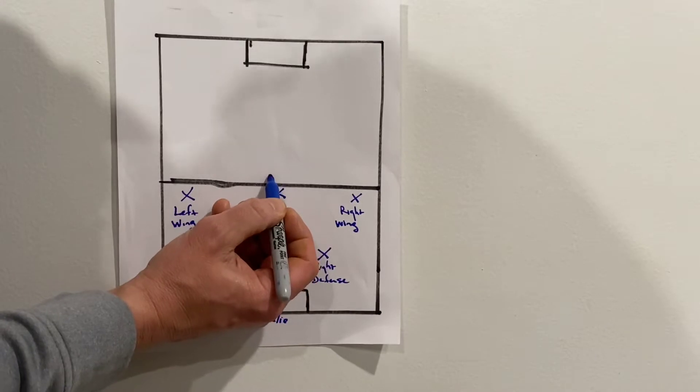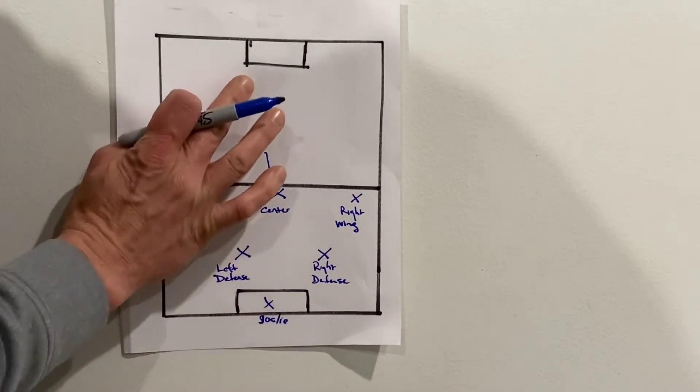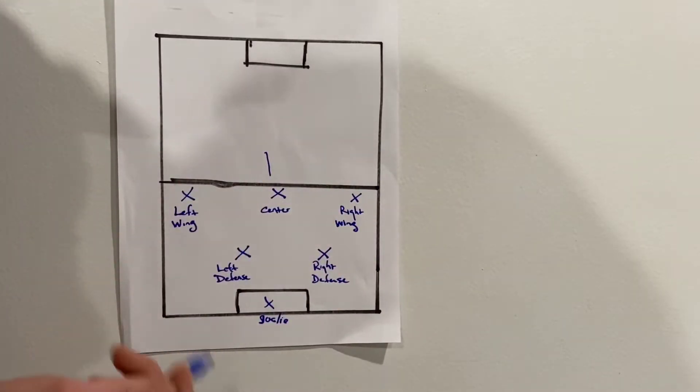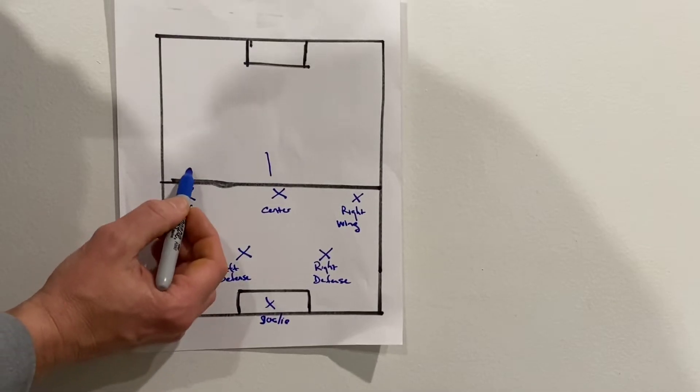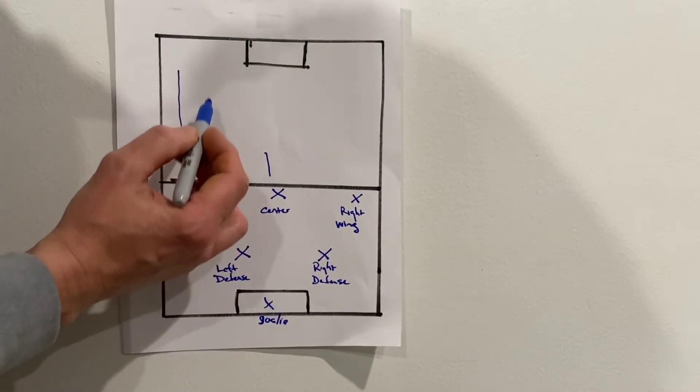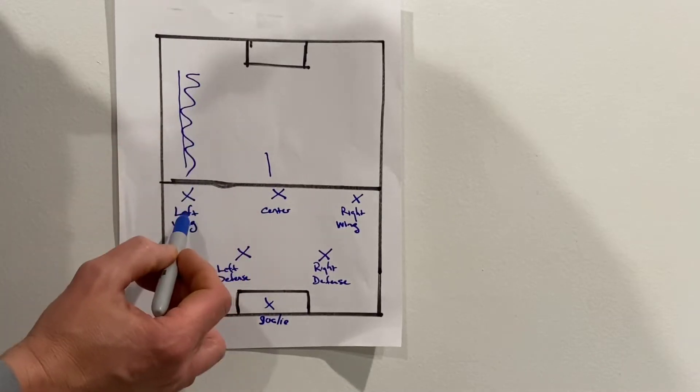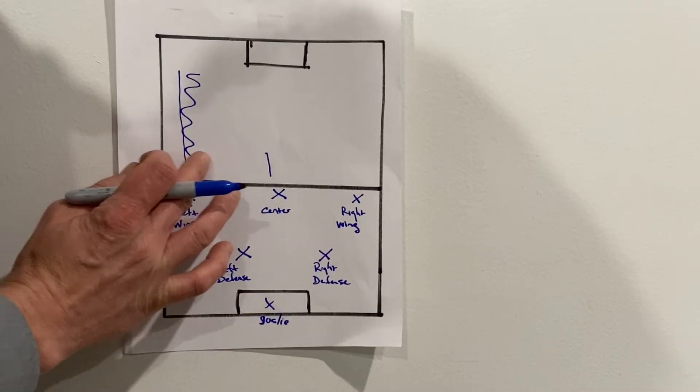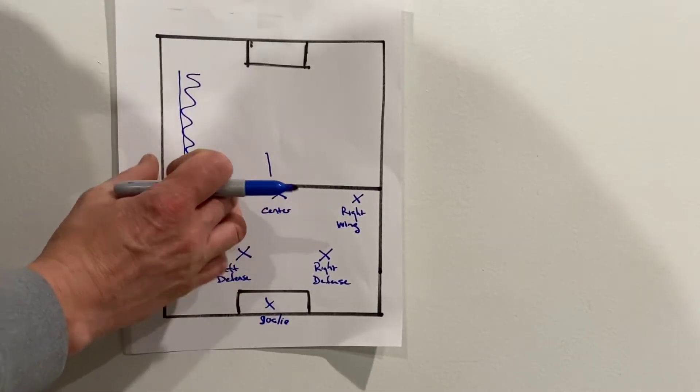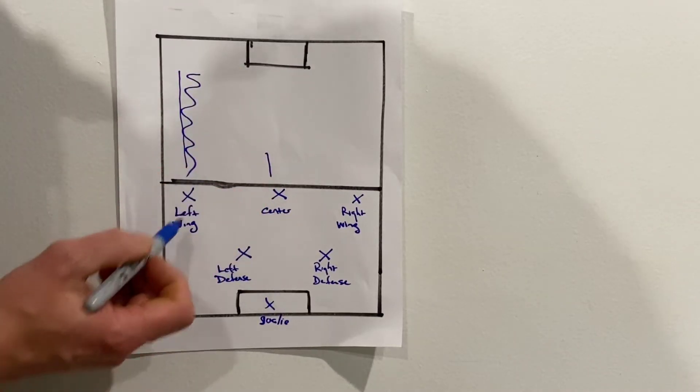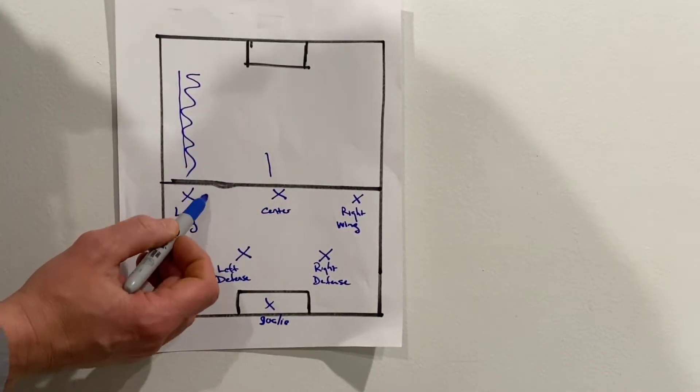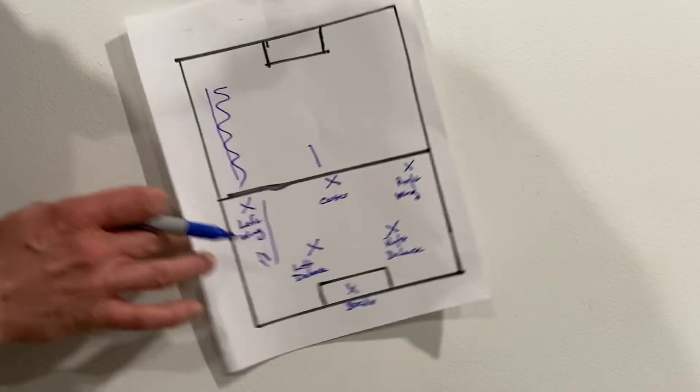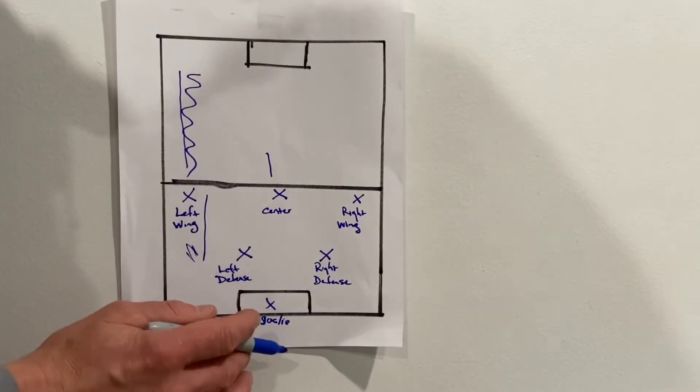If we're going into the offensive zone, we're going in to score. Basically, the left wing, this is his area right in here. He's allowed to move into the center a little bit, but this is his side, this is his responsibility. The left wing can also move back if the ball's going towards our net to help out.